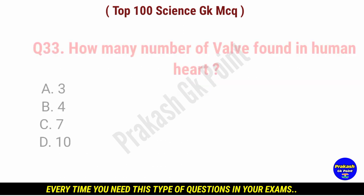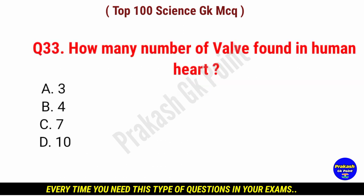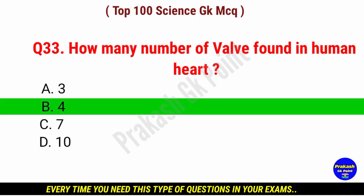How many valves are found in human heart? Answer: option B, four valves.